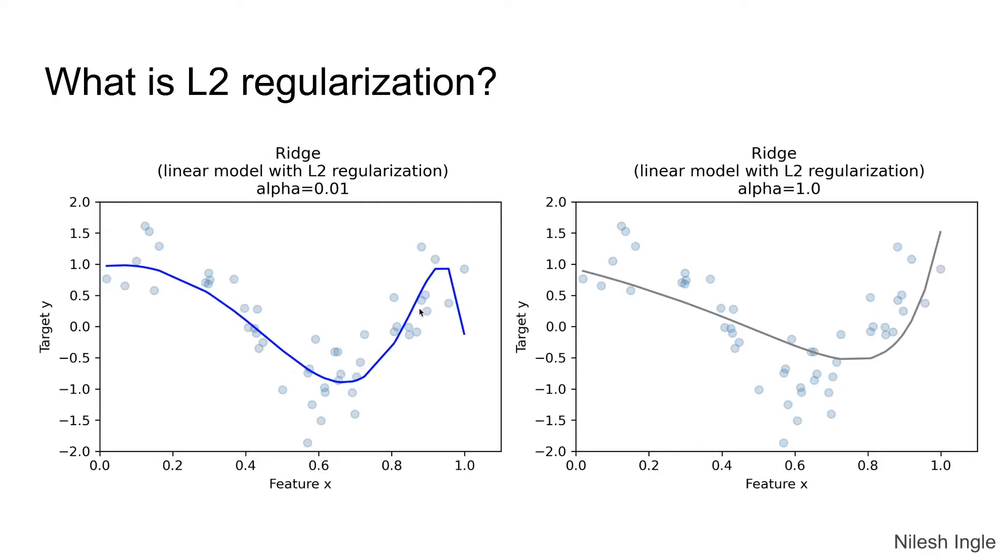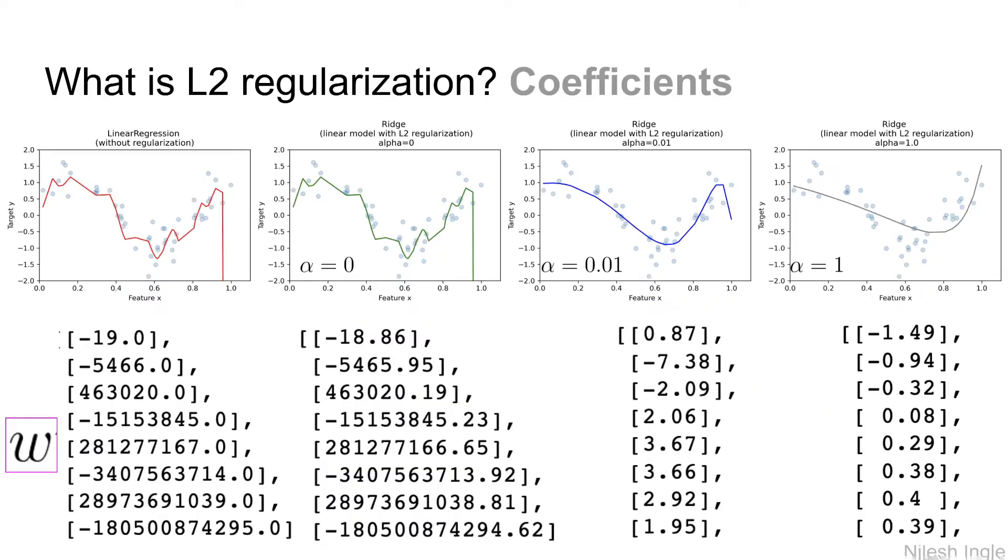As we increase the value of alpha to 0.01 we see that the fitted line does not weave through the data set - it's a smooth line that goes through the data. And if we increase the value of alpha even further we are starting to get into more high bias area because as you can see this line becomes more straight and it's not curved and it's missing some of the points. So what regularization helps us do is find the middle ground between high variance and high bias.